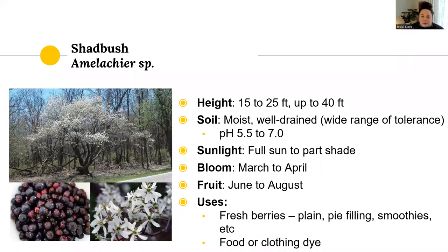Shadbush is also a really cool choice — a flowering tree that blooms March to April. They are beautiful and have an edible fruit ripe on the tree between June and August. They're a medium-sized small tree, 15 to 25 feet, up to 40 in certain areas. They have a wide range of tolerance from moist to well-drained soil and a wide pH range. Full sun to part shade. You can eat the fruit plain, use it for pie filling, smoothies, food dye, or a natural clothing dye — great if you're into foraging and using things from your buffer.